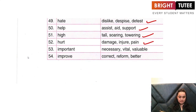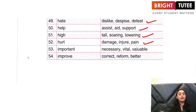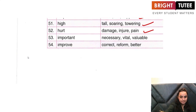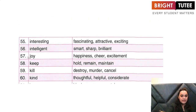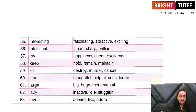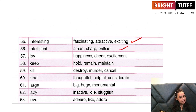'Important' — is necessary, vital, valuable. 'Improve' — is correct, reform, or better. 'Interesting' — means fascinating, attractive, exciting. 'Intelligent' — is smart, sharp, brilliant. 'Joy' — is happiness, cheer, excitement.